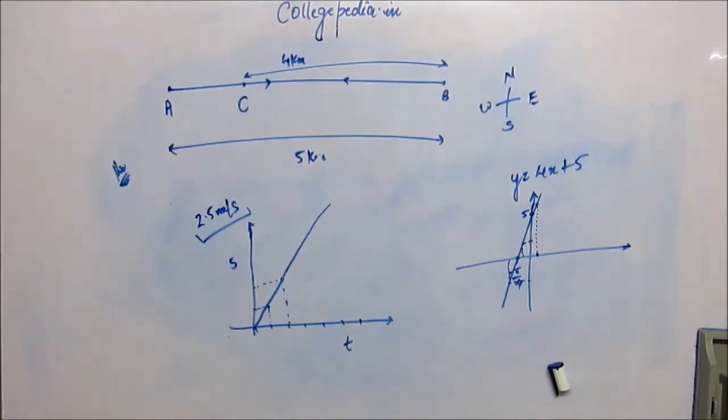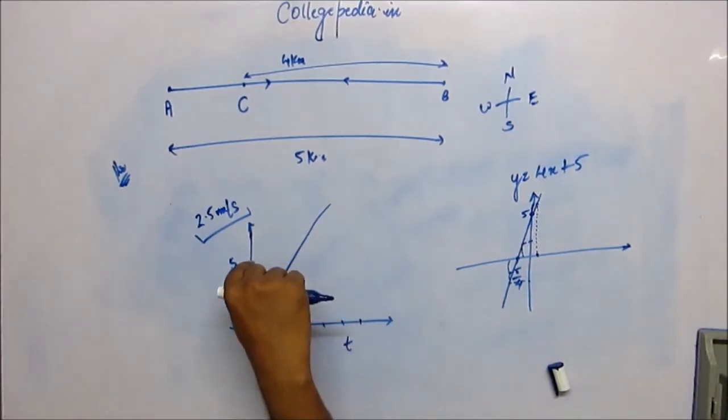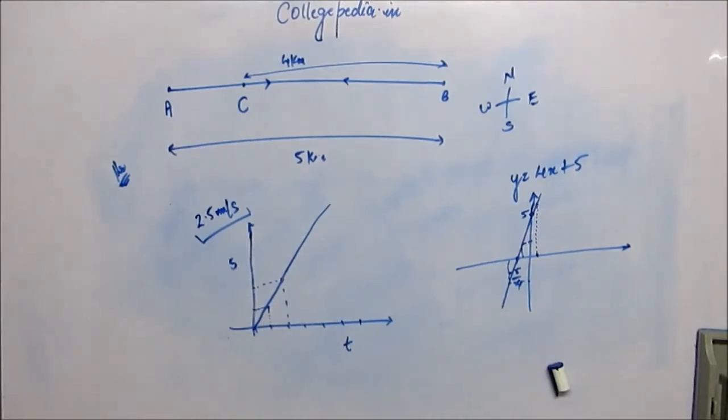But this is how it would be. The speed and time curve would be a straight line. Meaning that for equal interval of time, there is an equal increment in distance. So speed is actually remaining constant. So this is for uniform speed, the graph between distance, graph of distance versus time. This is how it would be.